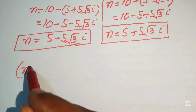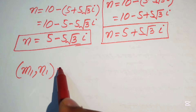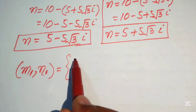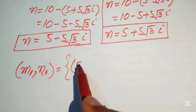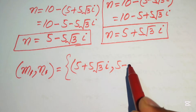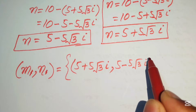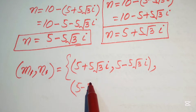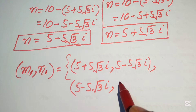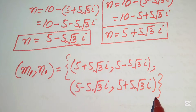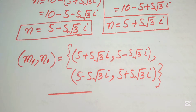Finally, the two solutions are: first solution: m equals 5 plus 5 root 3 iota and n equals 5 minus 5 root 3 iota; second solution: m equals 5 minus 5 root 3 iota and n equals 5 plus 5 root 3 iota. This is the final answer. Thank you for watching — please subscribe for more videos.